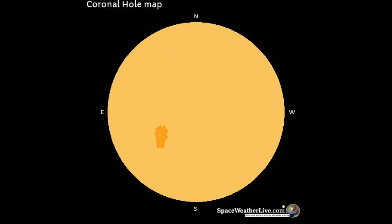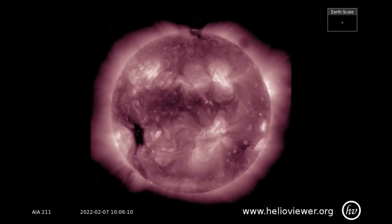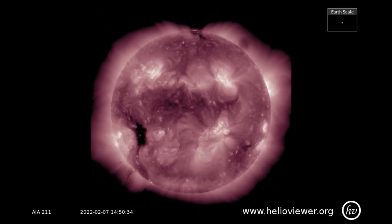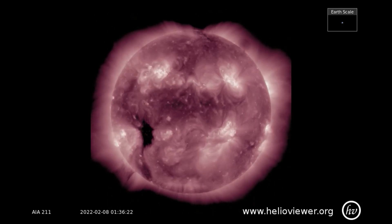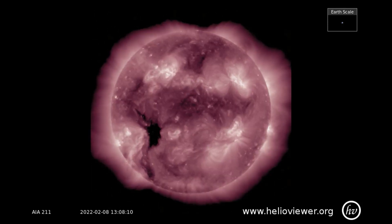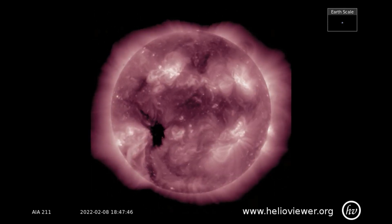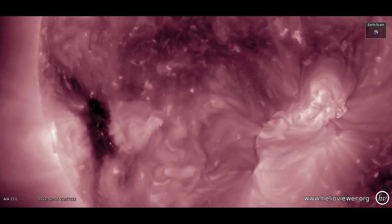There is one coronal hole on the Earth-facing side of the sun, rotating to face Earth in the near future. On the SDO 211 filter, the coronal hole can be observed as it rotates toward Earth. I'll move in for a closer view.